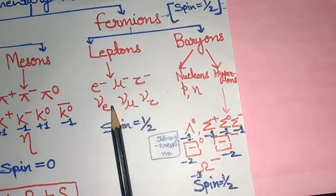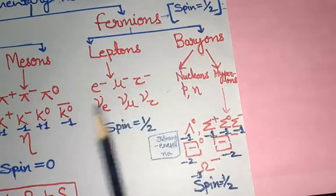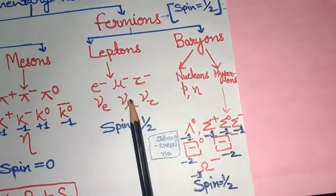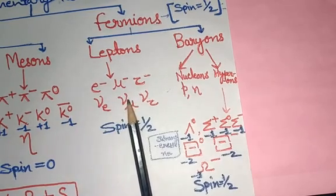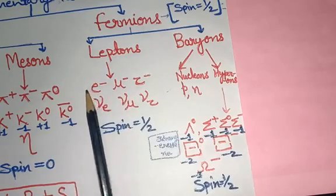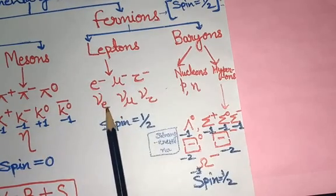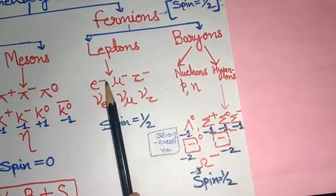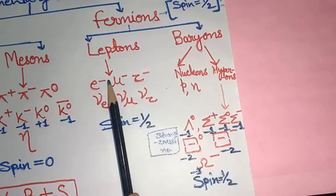What is the difference between antiparticles and particles? There is only a difference in charge. For example, an electron has charge −1, so its antiparticle is the positron, which has charge +1.